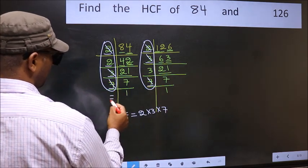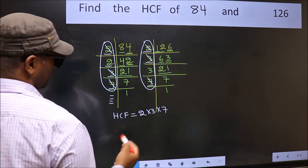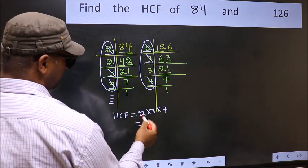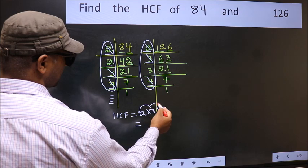No more numbers have been left out. So our HCF is 2 times 3, 6 times 7, 42 is our HCF.